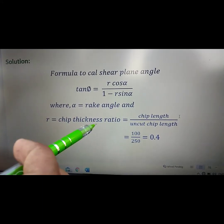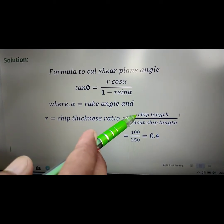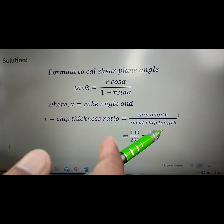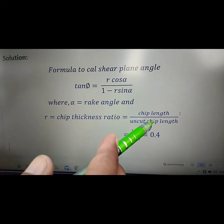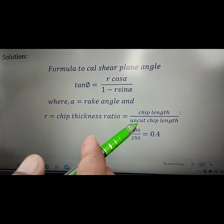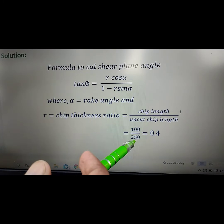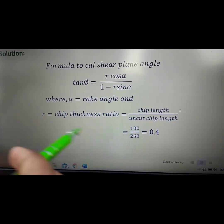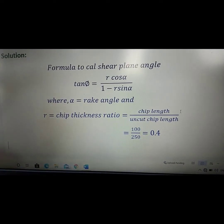In the turning process, chip length is 100 mm and uncut chip length is 250 mm, so r equals 100 over 250, which equals 0.4.